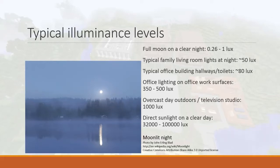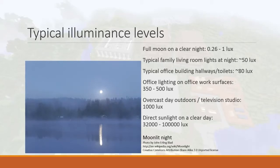In comparison, outdoors on an overcast day — clouds covering the entire sky — that's 1,000 lux. The sun still manages to put enough light through the clouds to light the ground to 1,000 lux, which is about as bright as a television studio. Television studios have really bright lights to ensure actors are seen clearly by the camera. A clear day in direct sunlight, with the sun blasting straight down, can reach up to 100,000 lux.